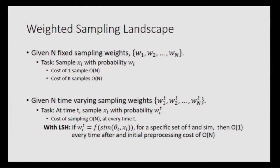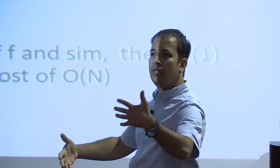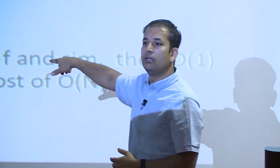Coming back to LSH as a sampler — I think the sampling view of LSH changes the landscape of weighted sampling. If you have N weights and want to sample Xi in proportion to those weights, one sample is order N because you have to read the weights first. If the weights are changing over time and at time t you need to sample Xi in proportion to W_i(t), it seems you can't avoid reading all the weights first. But it turns out that for functions of a very specific form, you can do it in roughly order one. I think there are many such functions, and this is where statistics and randomized data structures should talk more.